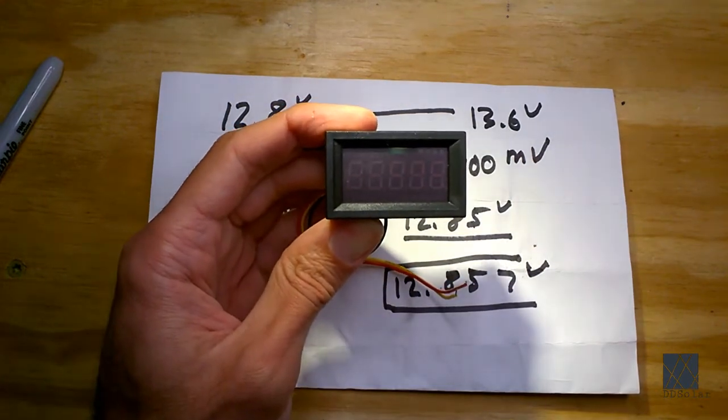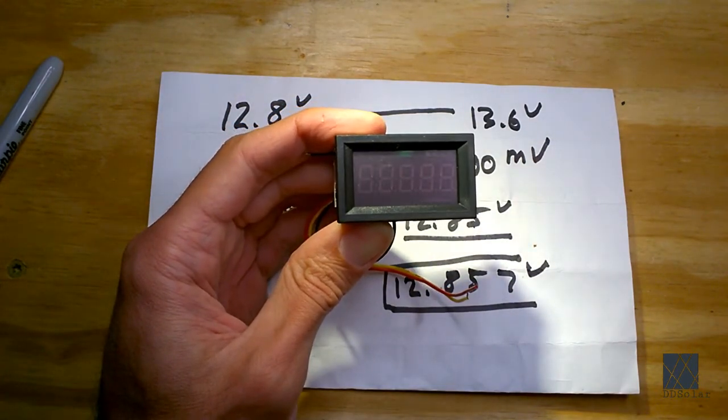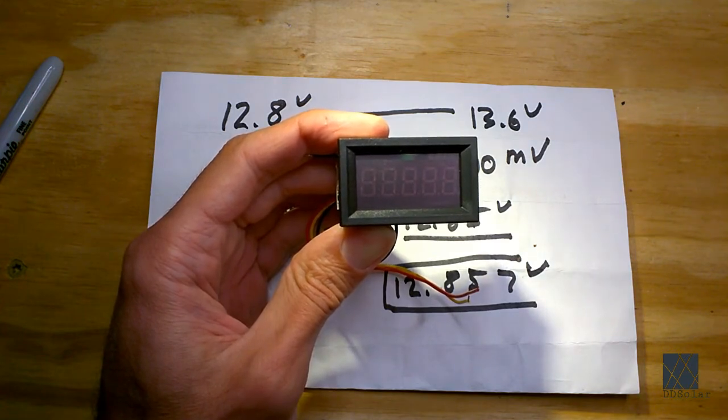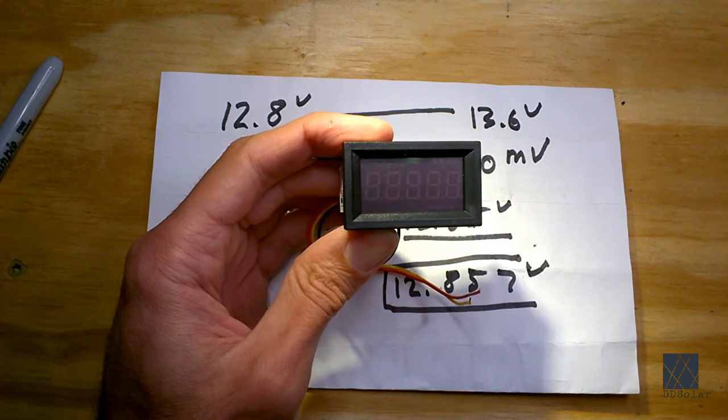Here's the voltmeter I purchased for this project. As you can see it has quite a few digits. This voltmeter is able to read a 12 volt battery pack with three places after the decimal.